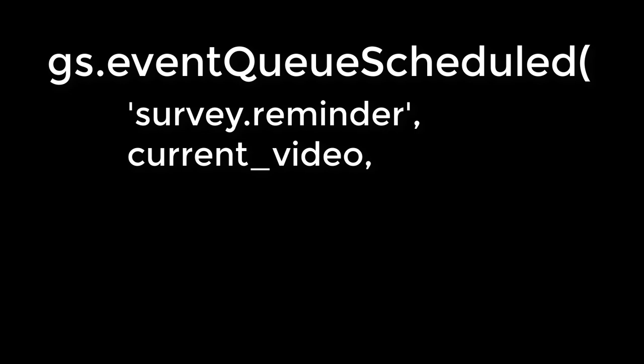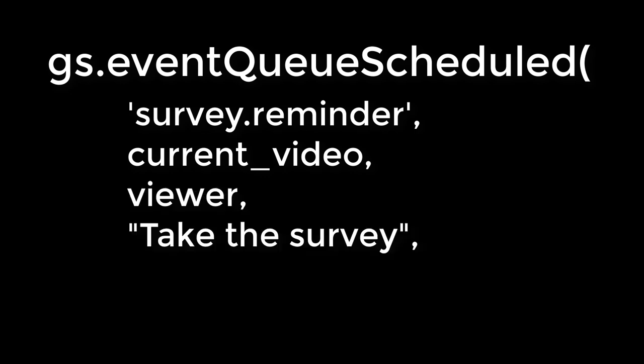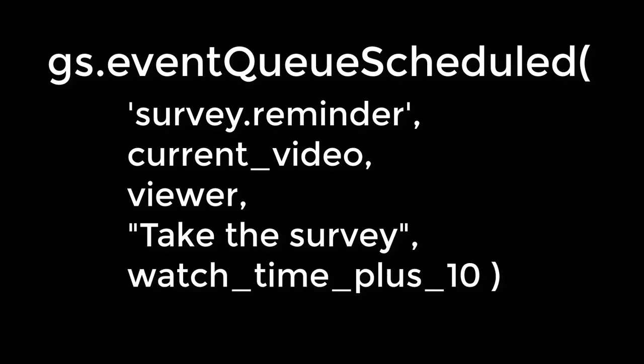I still have two parameters of my choosing, so I'm going to pick parm1 to be you, the viewer. Then parm2 will be the text that says 'take the survey.' And the last parameter we'll need is a datetime, which is my estimate of 10 minutes after the time you've viewed the video.